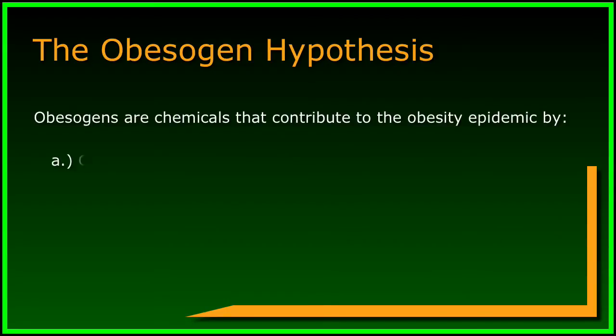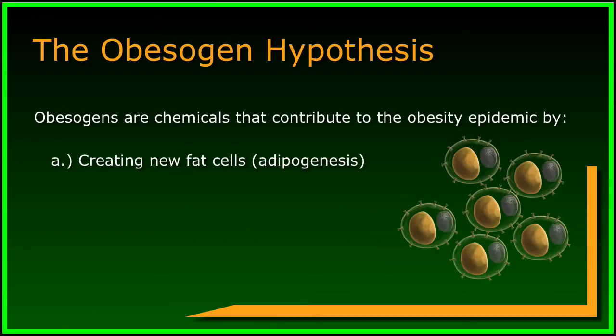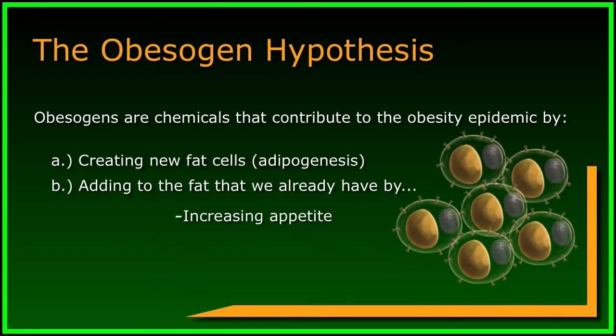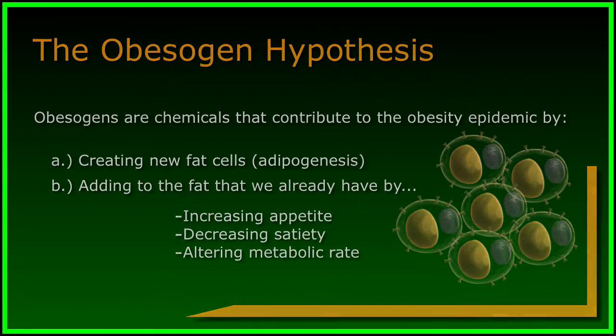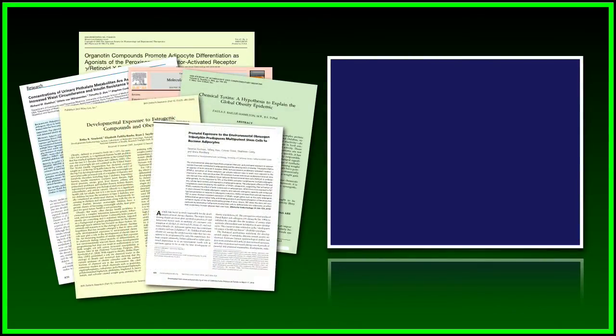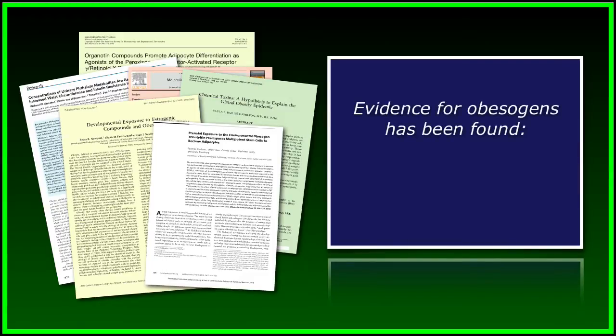They manage this by creating new fat cells, or by increasing the amount of fat that cells already have in them, by increasing appetite, decreasing satiety, or by altering metabolic rate. There is already quite a bit of support for this idea in the scientific literature from other studies that are similar, but not exactly like the one the obesogen hypothesis examines. Together, they reveal strong evidence for the need to look at obesogens as a contributing factor to obesity. Let's look at them one at a time.